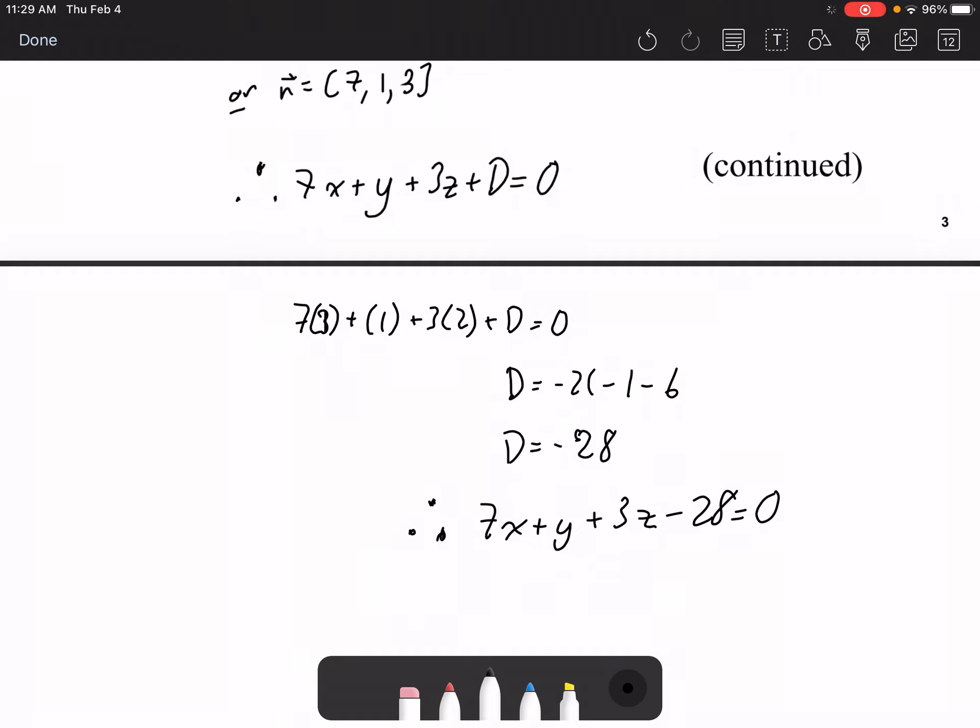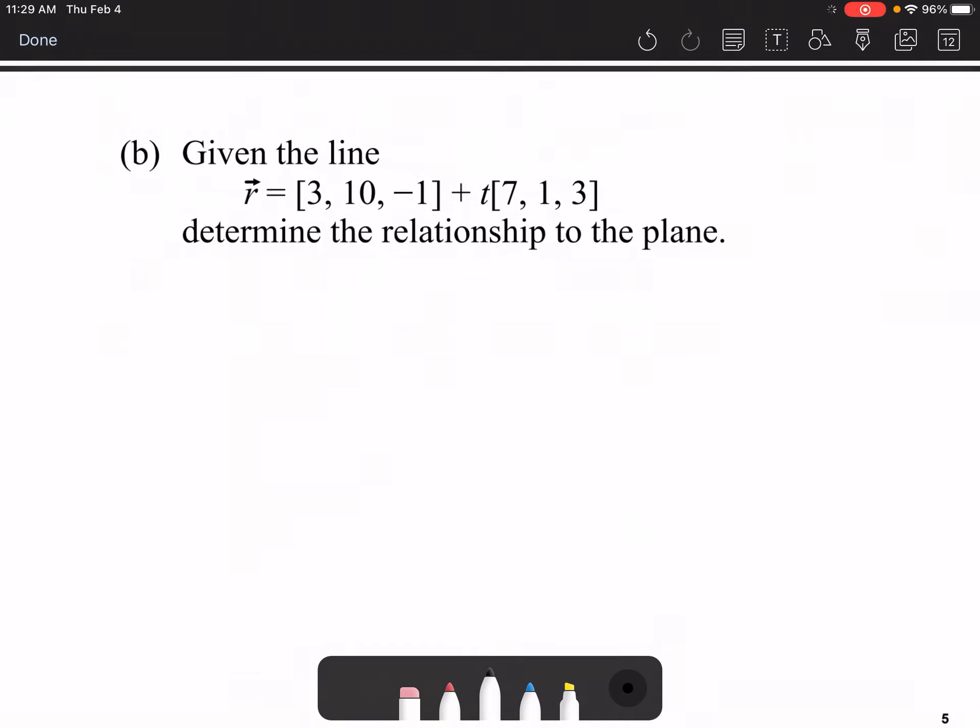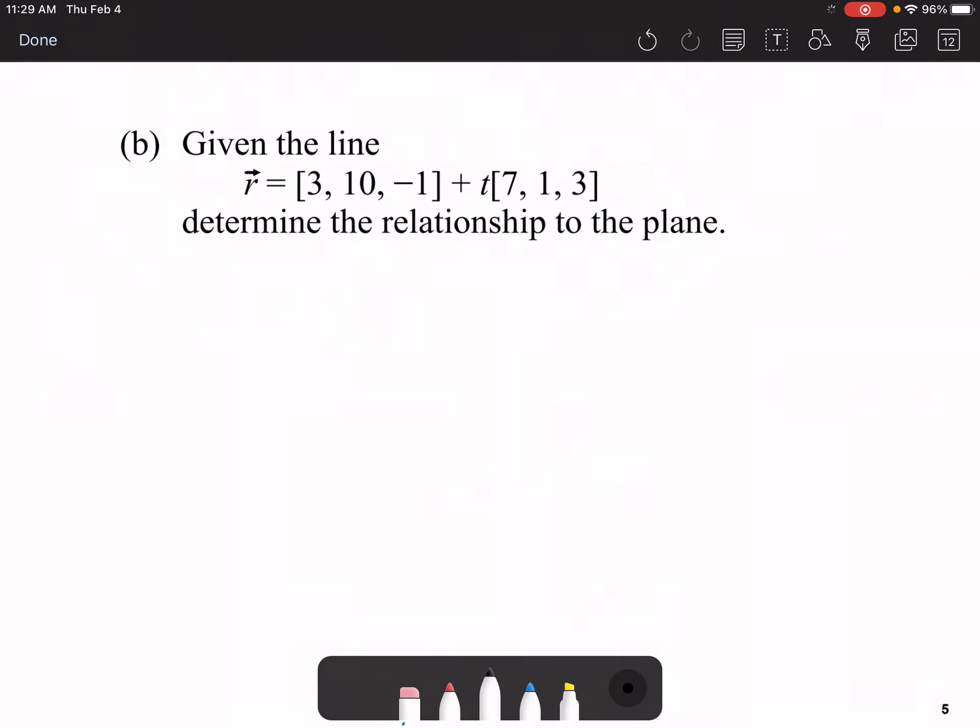Sometimes they take the negative 28 and they move it to the other side of the equation and set this equal to 28. Okay, so, moving right along. Now that we've got that line that you have, what we're going to do is we're going to see how it relates to this line. Sorry, now that we have the plane. So, remember the plane has the equation 7x plus y plus 3z minus 28 equals 0.